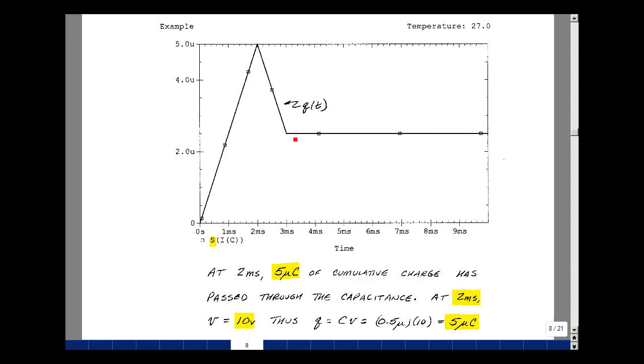You could also do it at any point along here. We do it over here. The value of the voltage at this particular point was five volts, and again multiplying that by 0.5 microfarads, you would wind up getting two and a half microcoulombs, and that's exactly what you have right over here. We can calculate how much charge is stored on a capacitance by simply taking the capacitance and multiplying by the voltage of that particular instant in time. These are some of the properties of capacitance that we've illustrated by using the piecewise program.